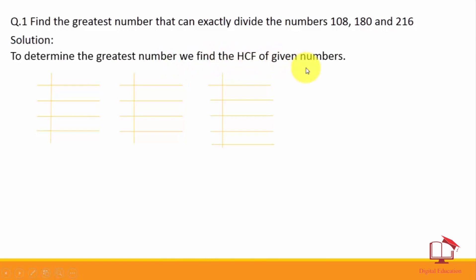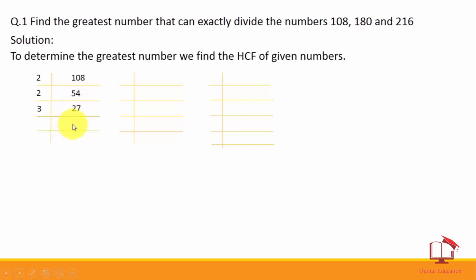Now firstly we will take the prime factors of 108. We get: 2 × 2 = 4, carry 1; 2 × 7 = 14; then 3 × 3 = 9; 3 × 3 = 9. So the prime factors of 108 are 2², 3³.